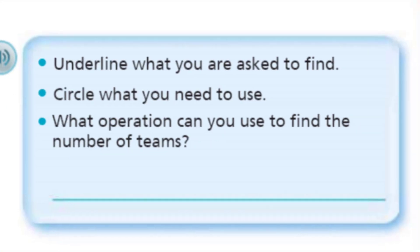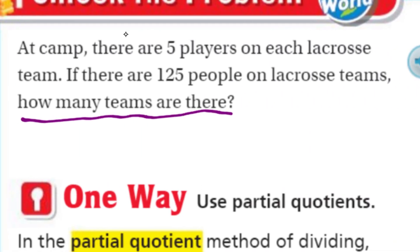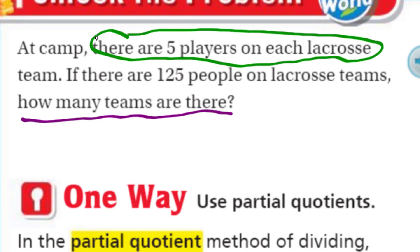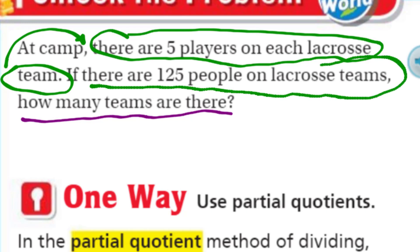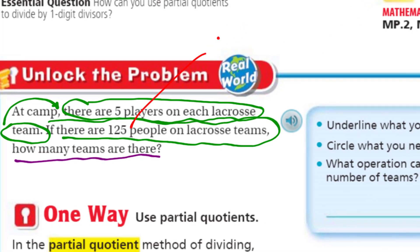Then it says circle what you need to use. Of course we're going to be using that there's five players on each lacrosse team — we're going to circle that information. We're also going to be using the 125 people on lacrosse teams — that's just the total amount. That 125 lets me know this is the dividend, the number that we're dividing. And the fact that there's five players on each lacrosse team lets us know the size of the groups. We don't know how many groups, so this is called measurement division, but that is still called the divisor.